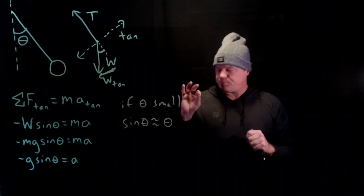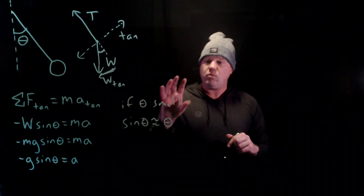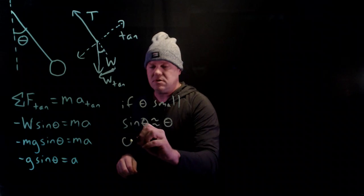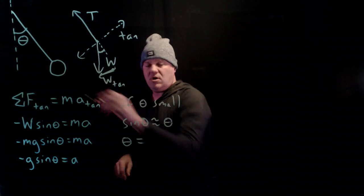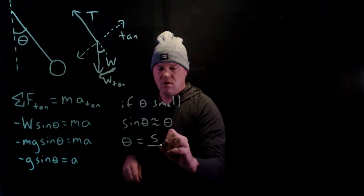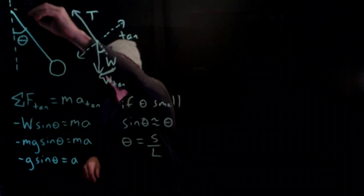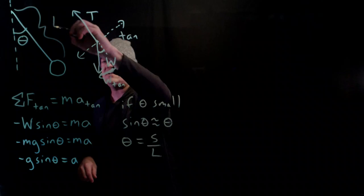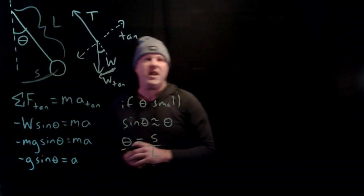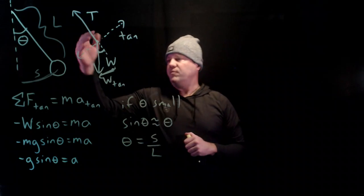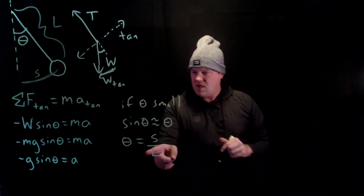So that claim, plus the definition of angle, so in radians, would be arc length over the radius, which in this case is the length of the pendulum. So that's L, and then this distance here would be, we'll call that S, the arc length. So definition of the radian, arc length over radius.